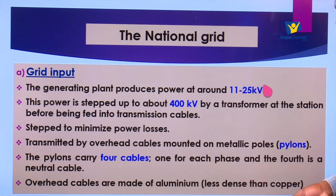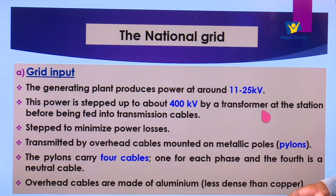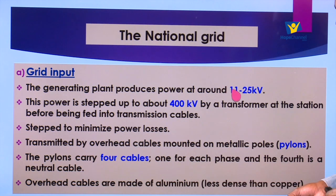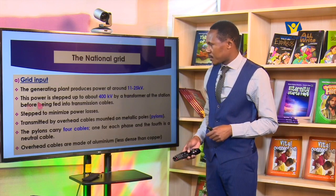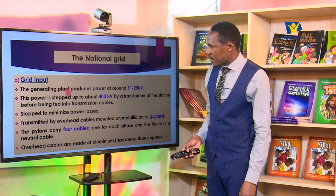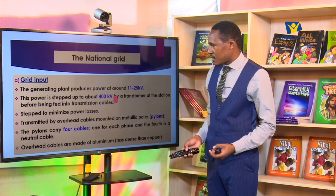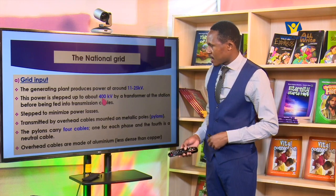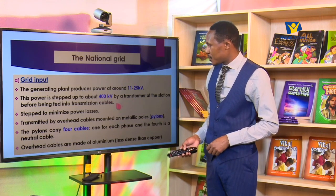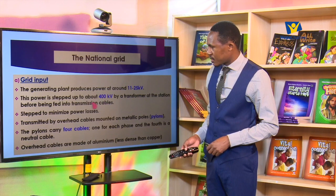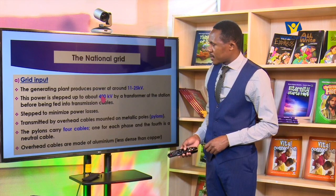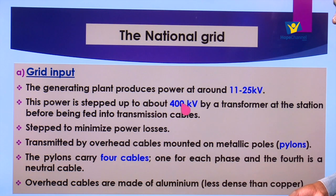At the power plants, power is generated at around 11 to 25 kilovolts — that is 11,000 to 25,000 volts. But for transmission this is not high enough; if transmitted at that voltage a lot of power will be lost. After the power comes from the plant and is fed into the grid system, it is stepped up to around 400 kilovolts — that is 400,000 volts — before it is fed into the transmission cables. The stepping up minimizes power losses in the process of transmission.